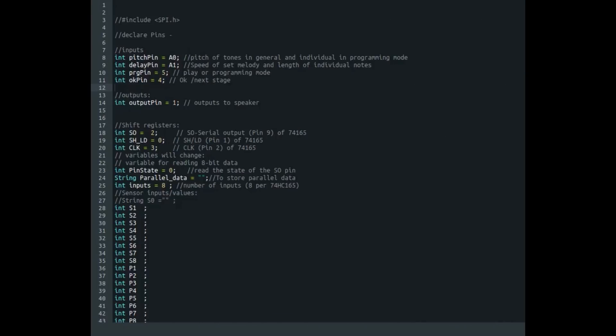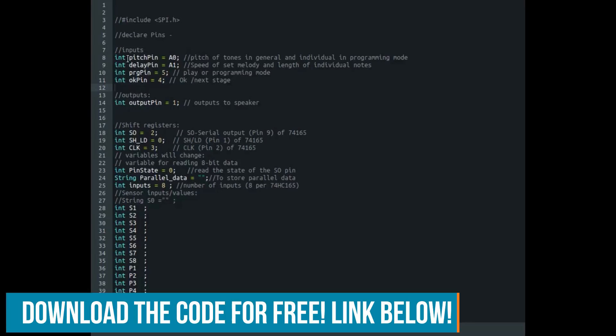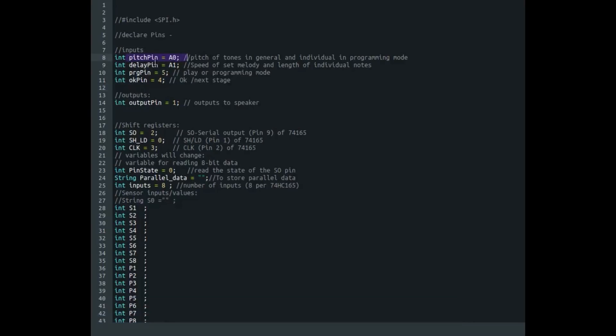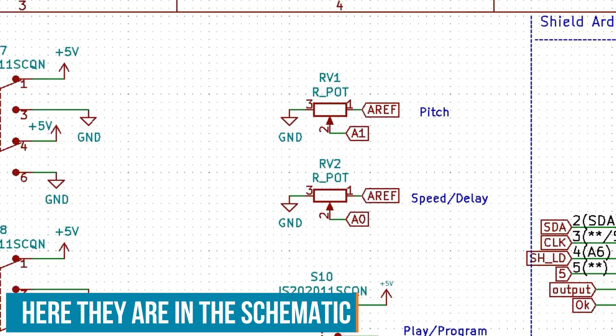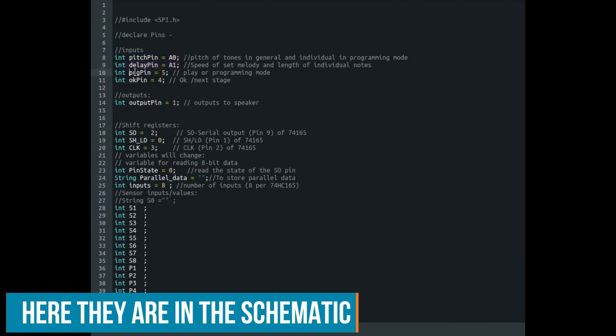This is my Synthwatch X standalone code. First, we have to declare some pins. We need an analog pin to read the potentiometer for the pitch. We need another one for the delay. The delay is the time between two notes. You can also call that speed or the length of the note. Then there's the programming pin.